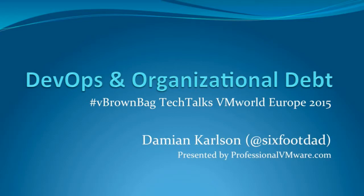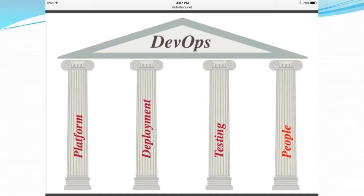Before I get into what organizational debt is, let's take a look at a cool picture from my friend Matt Calger, illustrating the four key pillars or key tenets of DevOps. I apologize for the potato quality — I think this was a screenshot off of an iPad. As you can see, we've got platform, deployment, testing, and people. People are typically the biggest problem in IT, sometimes known as the layer 8 problem.